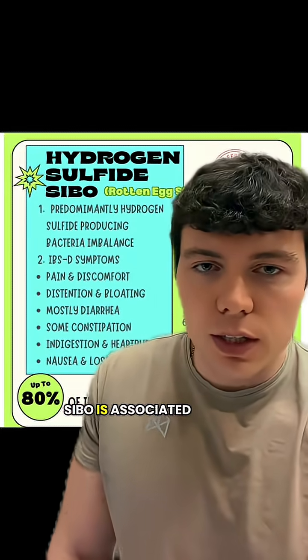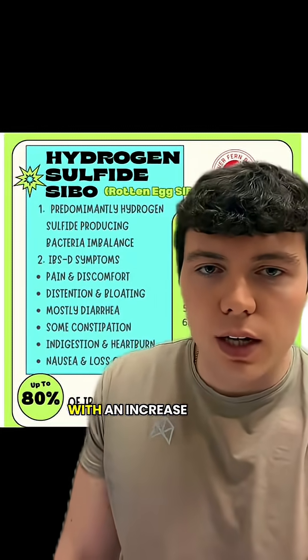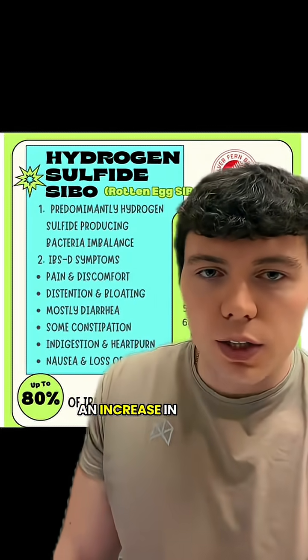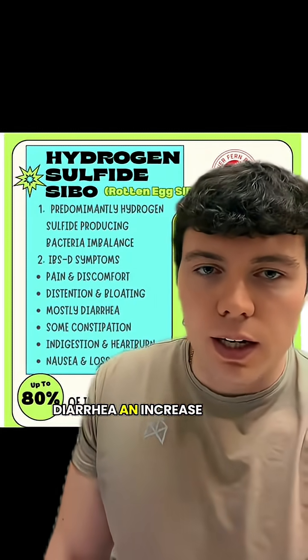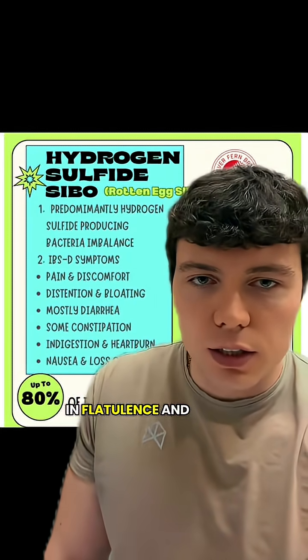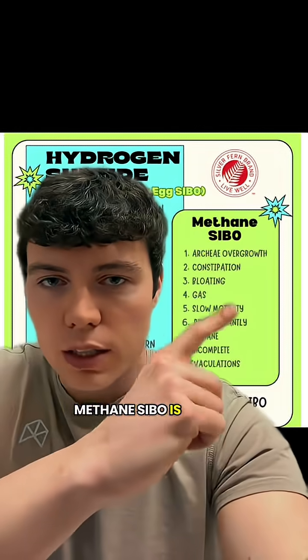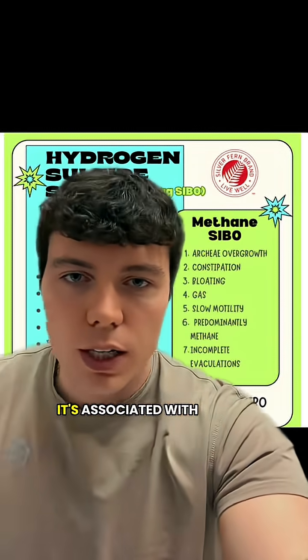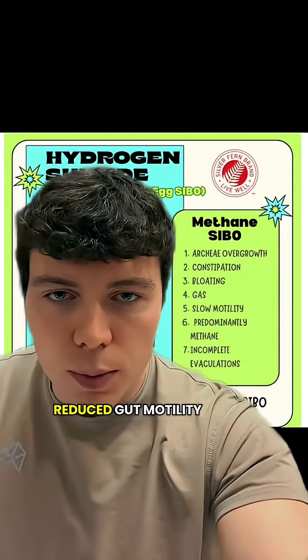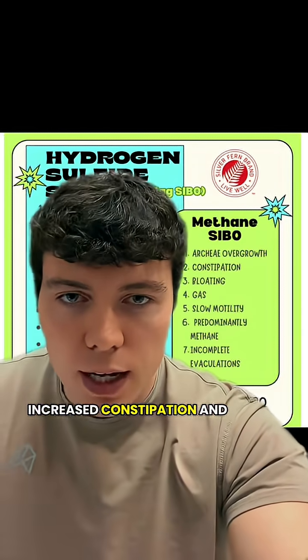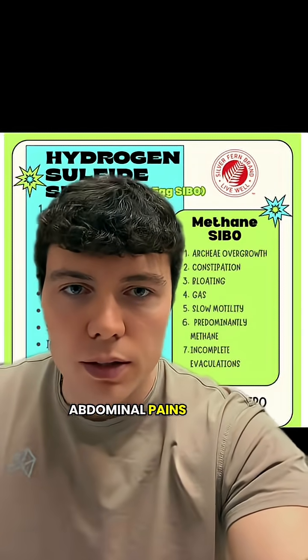Hydrogen SIBO is associated with an increase in gut motility, increased diarrhea, increased flatulence, and also bad breath. Methane SIBO is less common and is associated with reduced gut motility, increased constipation, and abdominal pains.